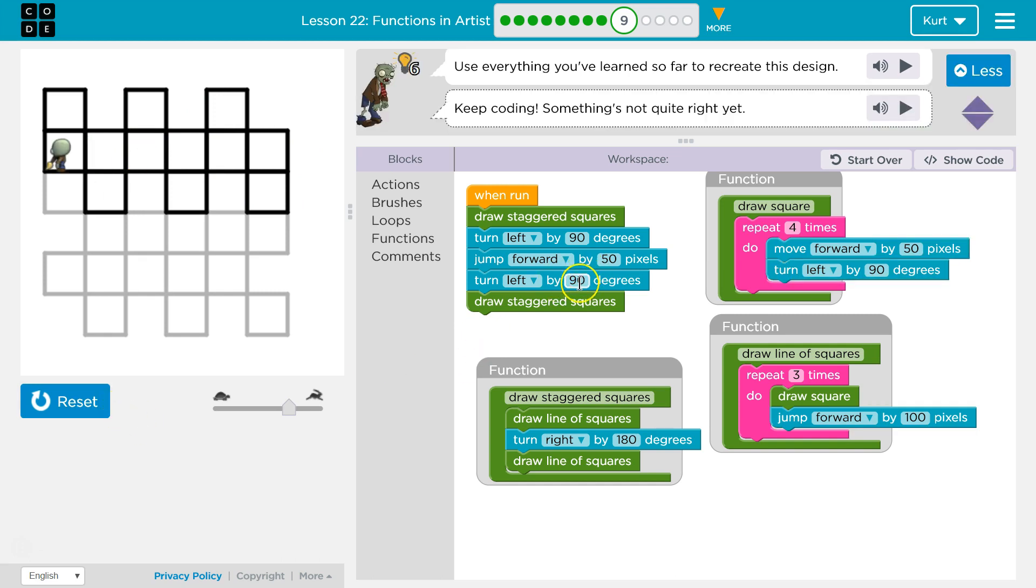So, instead of jumping 50, let's jump all the way to the bottom of this square, and jump 100. Instead of just jumping to here, let's jump to here.